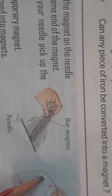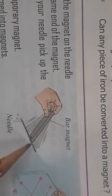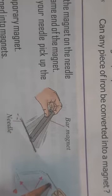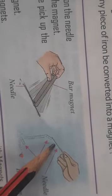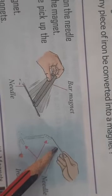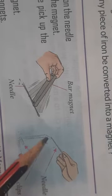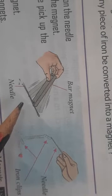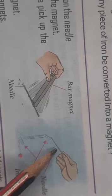This happened because the needle has become a temporary magnet. When you continuously rub it, it becomes a temporary magnet. Only magnetic materials can be turned into temporary magnets. The needle is made of iron, so it can be converted into a temporary magnet. It will have its effect only for a short period of time.